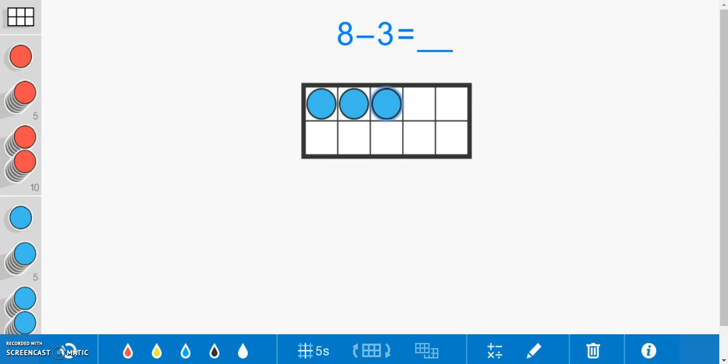To find the other part, which is the amount of M&Ms Ava has, we must count up from three until we reach our whole of eight. Red counters will be used to represent the amount of M&Ms. Four, five, six, seven, eight. As you can see, we have reached our whole of eight by combining the two parts. There are five red counters, which means that Ava has five pieces of M&Ms.